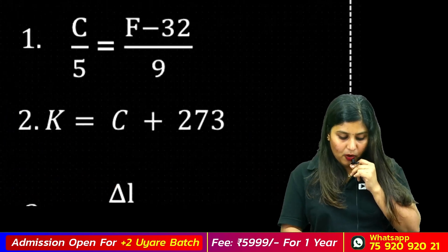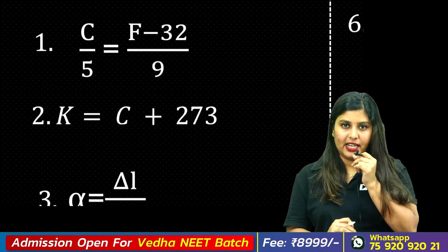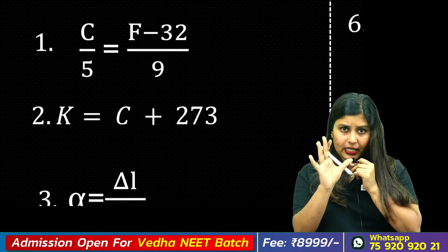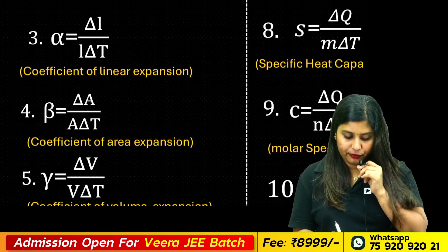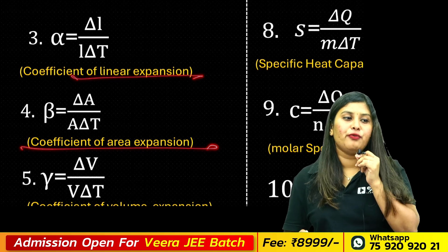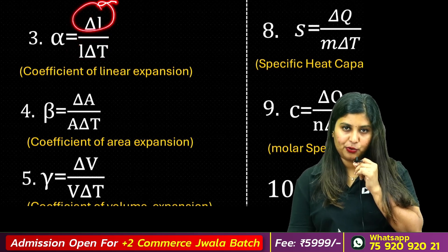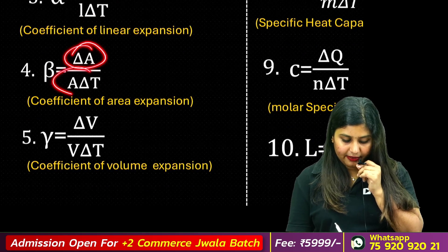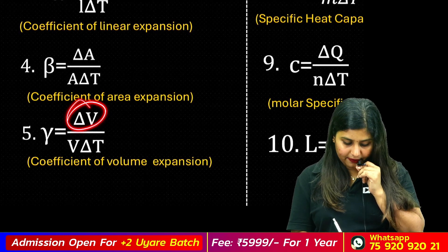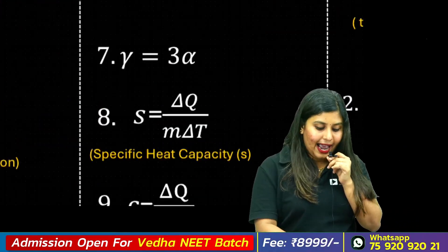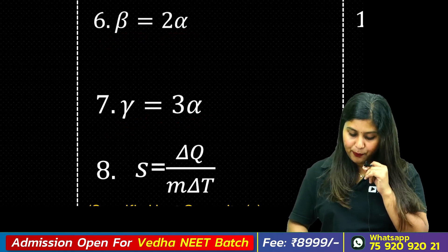In Thermal Properties of Matter, the most important is the temperature relationship: C/5 equals (F minus 32)/9, converting between Celsius and Fahrenheit. Kelvin equals Celsius plus 273. The coefficients of thermal expansion are: alpha (linear), beta (area), gamma (volume). Their relationships are: delta L by L delta T for linear expansion; beta equals 2 alpha; gamma equals 3 alpha.